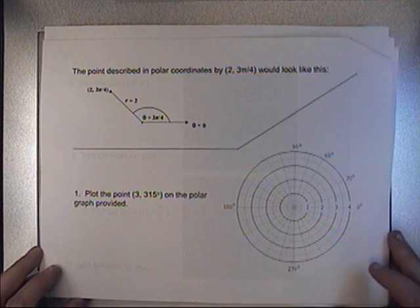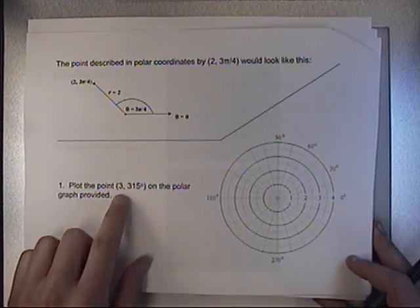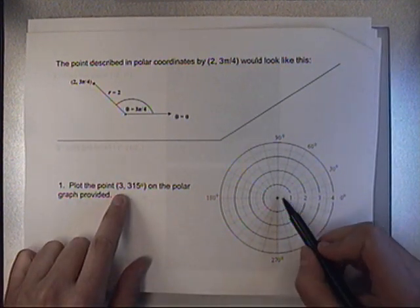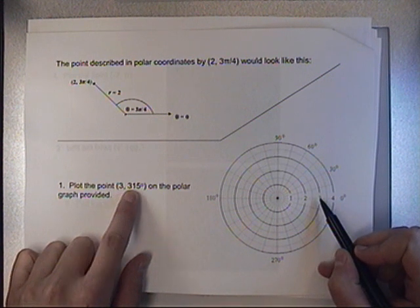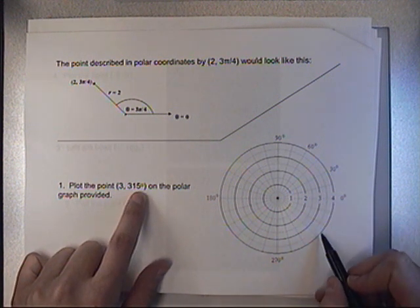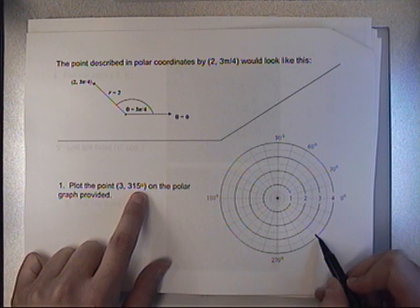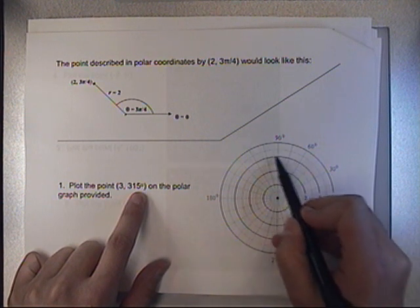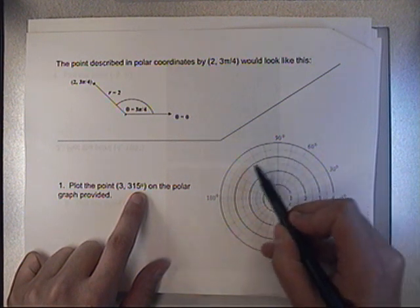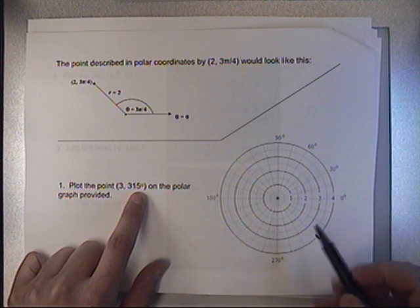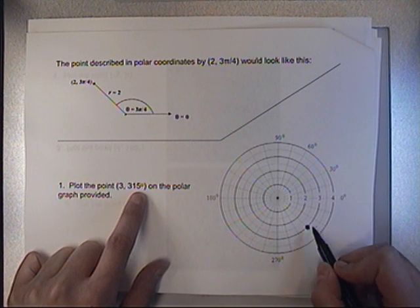For example, if I wanted to find the point that is 3 units away from the origin, here's the origin, I'd go over to 3, and then I would rotate to 315 degrees, which is right here in the middle of the 4th quadrant. I'd go around the 3 units away all the way over to the 4th quadrant, and it would be that location right there.